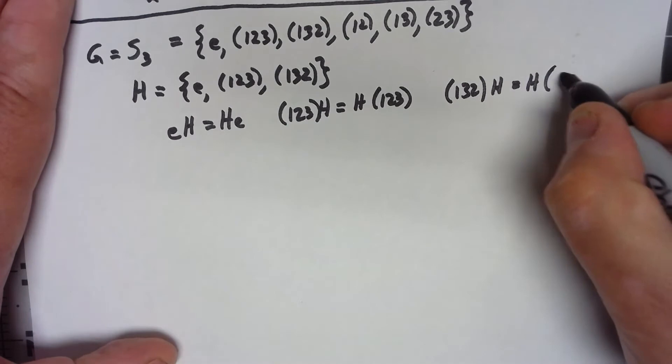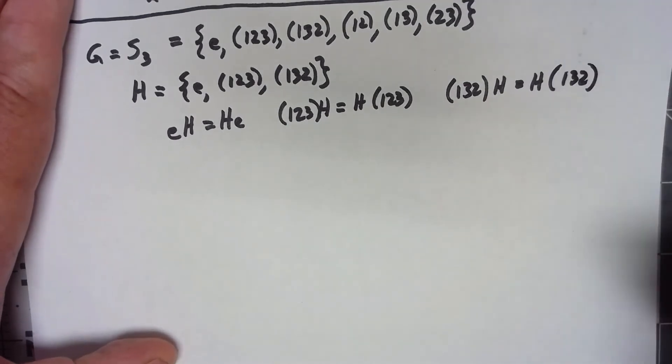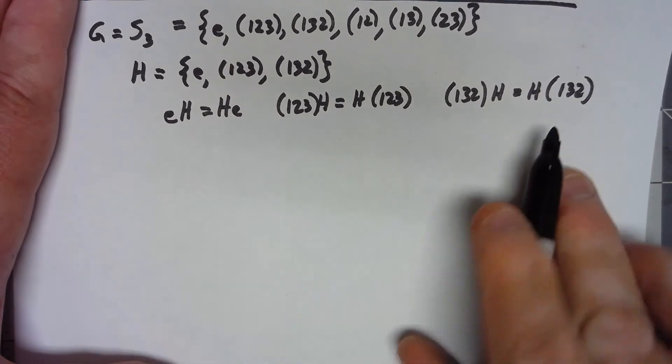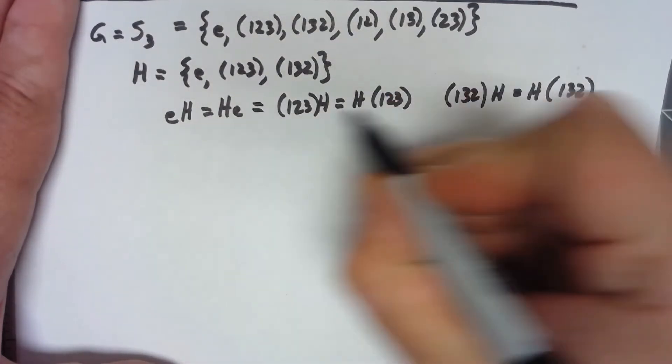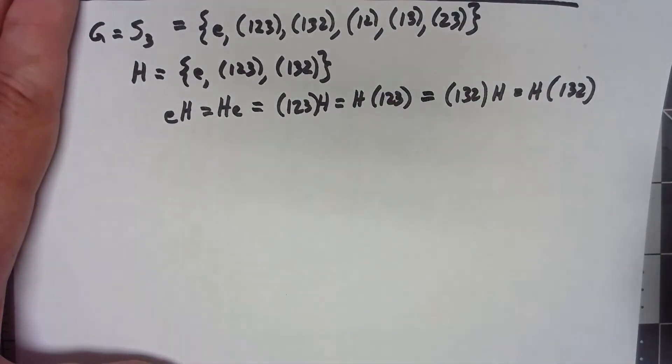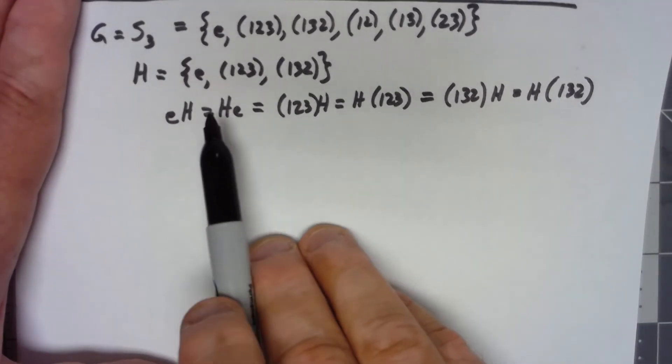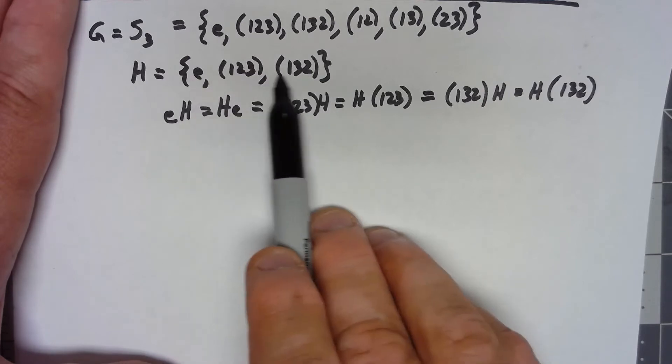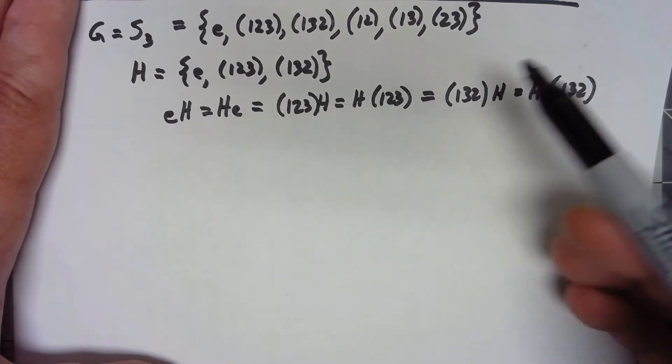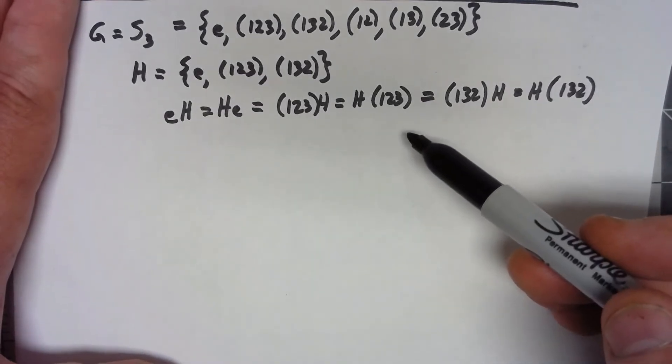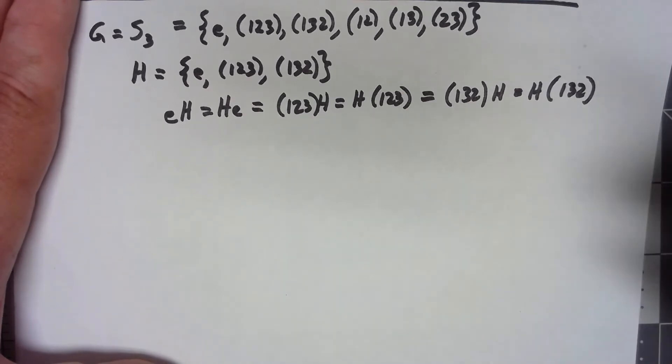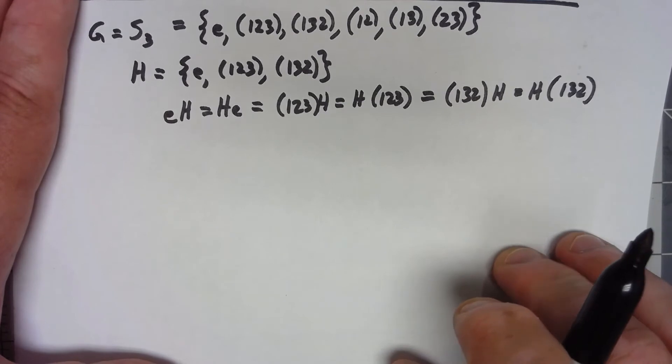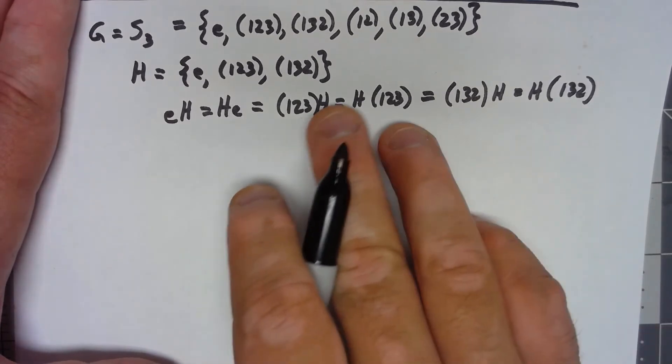I want to show that each left coset is the same as the right coset. I'm not going to bother doing it for the identity, (1,2,3), or (1,3,2) because all three of those are the same thing. Any time you take a subgroup and multiply by one of the elements on the inside, that coset is the subgroup itself. Obviously the left and right cosets are the same. The interesting ones is when I start doing the transposition together with H.